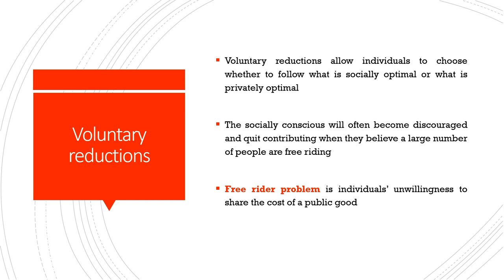Voluntary reductions allow individuals to choose whether to follow what is socially or privately optimal. Socially conscious people will often become discouraged if they believe a large number of people will free ride — an issue also seen in insurance markets in the context of moral hazard. The free-rider problem refers to individuals' unwillingness to share the cost of a public good. These are important areas of intervention in public economics, though we will not take them up in detail in this course.